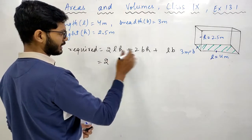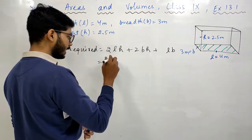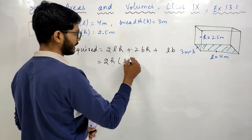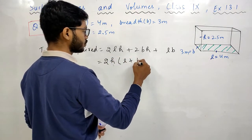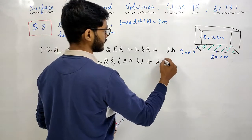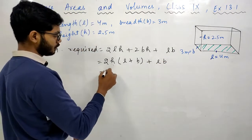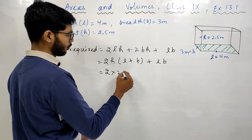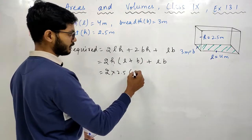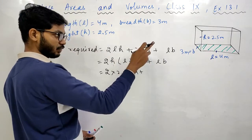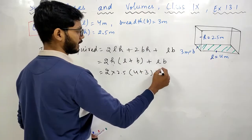See, H is common here. If something is common, always take it out to solve because it reduces your calculation. So 2 into H, where H value is 2.5, L value is 4, plus B value is 3.